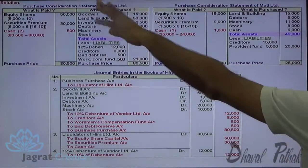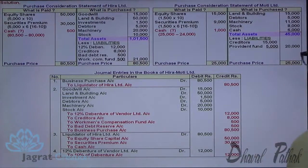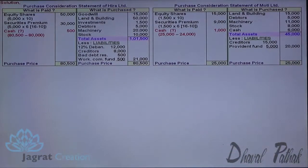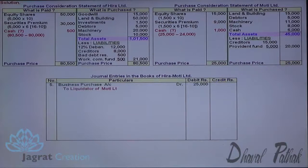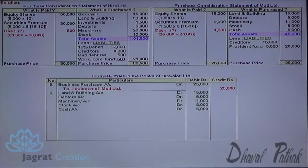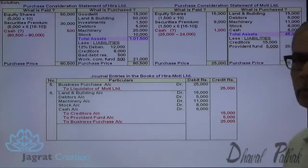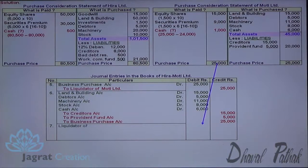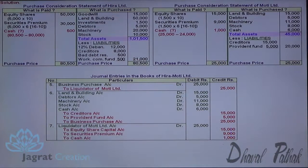Journal entries for purchase of business of Muthi Limited: (1) Business purchase account debit / Liquidator of Muthi Limited credit. (2) Land and building, debtors, machinery, stock, cash accounts debited; creditors, provident fund, and business purchase account credited — being assets and liabilities purchased. (3) Liquidator of Muthi Limited debit / equity share capital, security premium, and cash or bank account credited — being payment to liquidator.